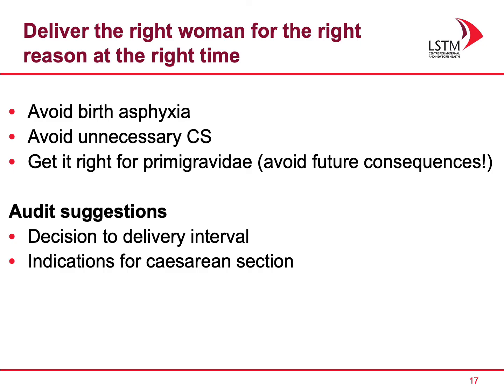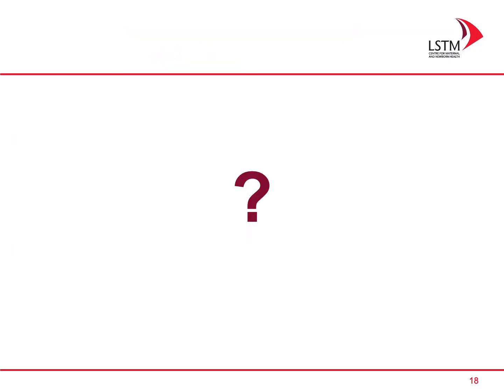To look at whether we are doing the best we can, here are a couple of audit suggestions: looking at the decision-to-delivery interval time — so having made the decision to deliver, how long does it actually take to deliver the baby — and also looking at the indications for caesarean section and whether these are appropriate.